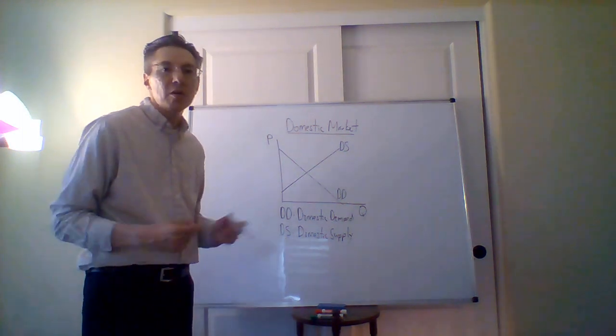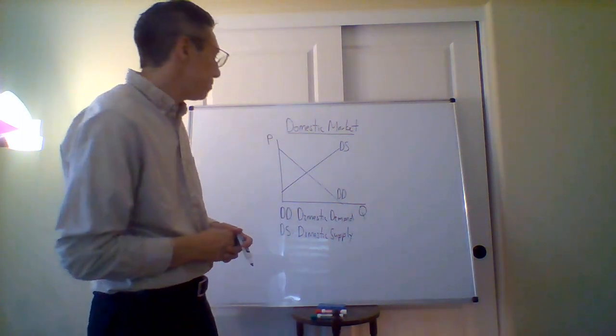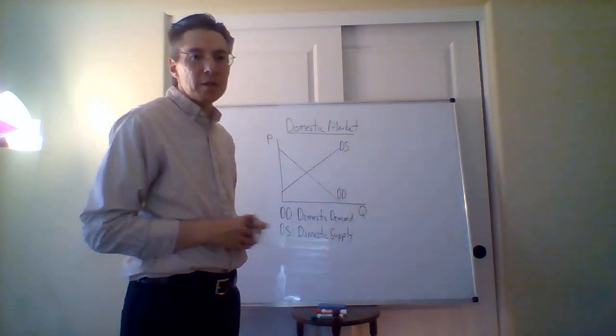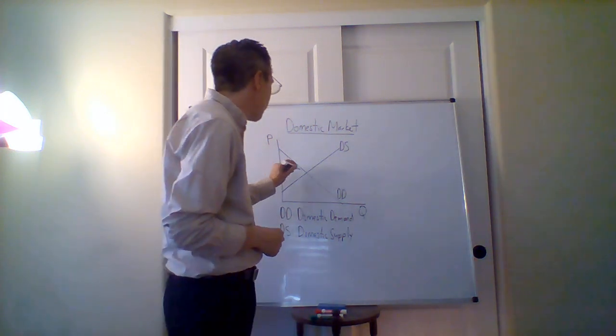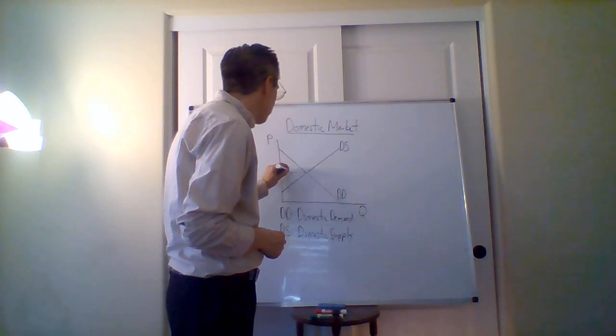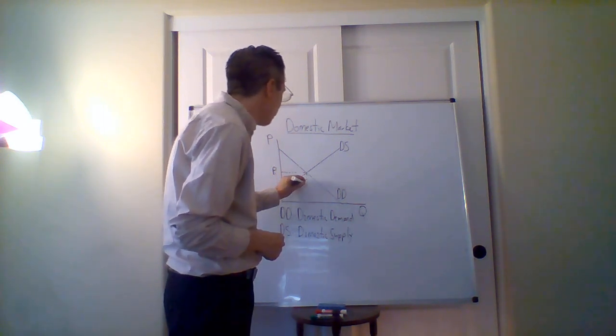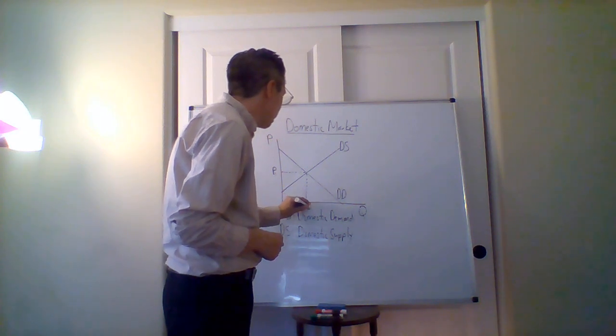What we also know is that the price is at the equilibrium. Where's the equilibrium? Where the supply and demand curves cross. In this case, where domestic supply equals domestic demand.